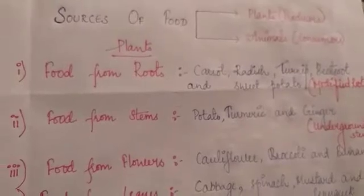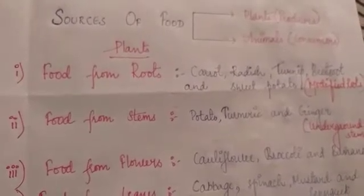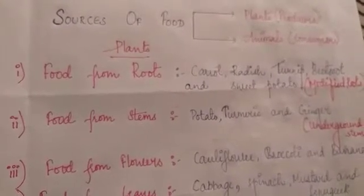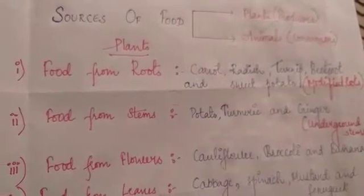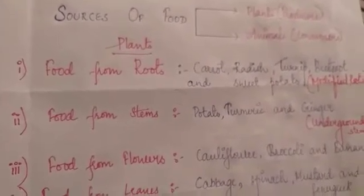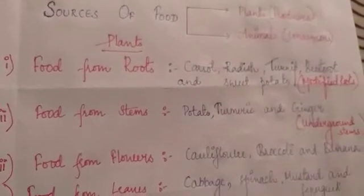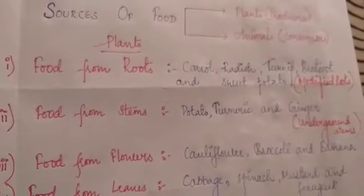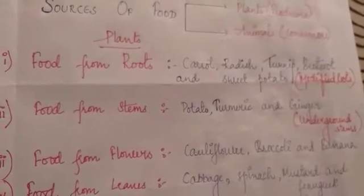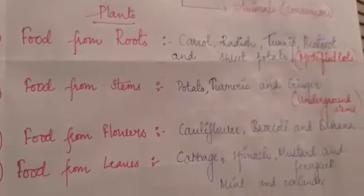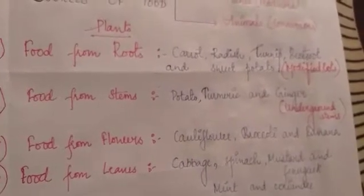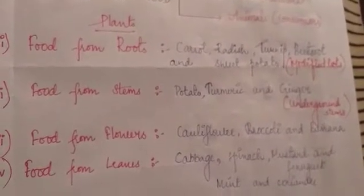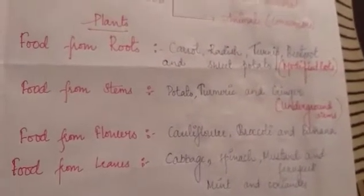First is food from roots. There are some plants like carrot, turnip, beetroot, radish and sweet potato where the plant stores food in the roots — we call them modified roots. Next is food from stems. Similarly, some plants like ginger, potato and turmeric store their food in the stem, so we call them underground stems.